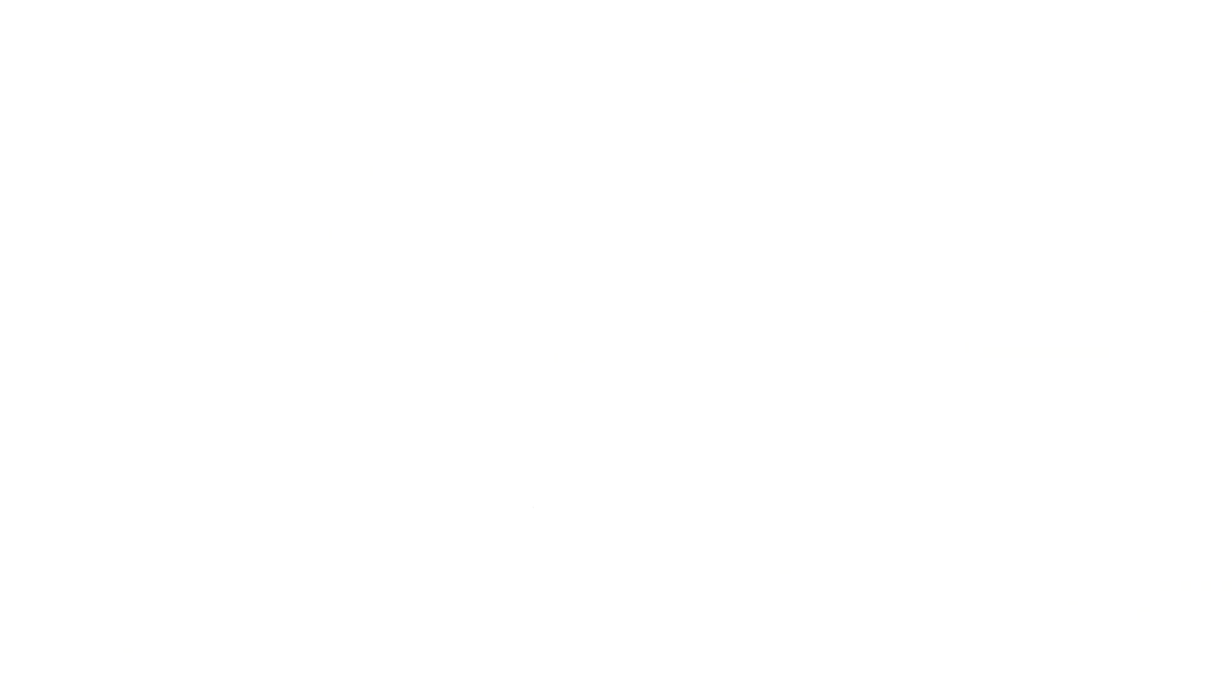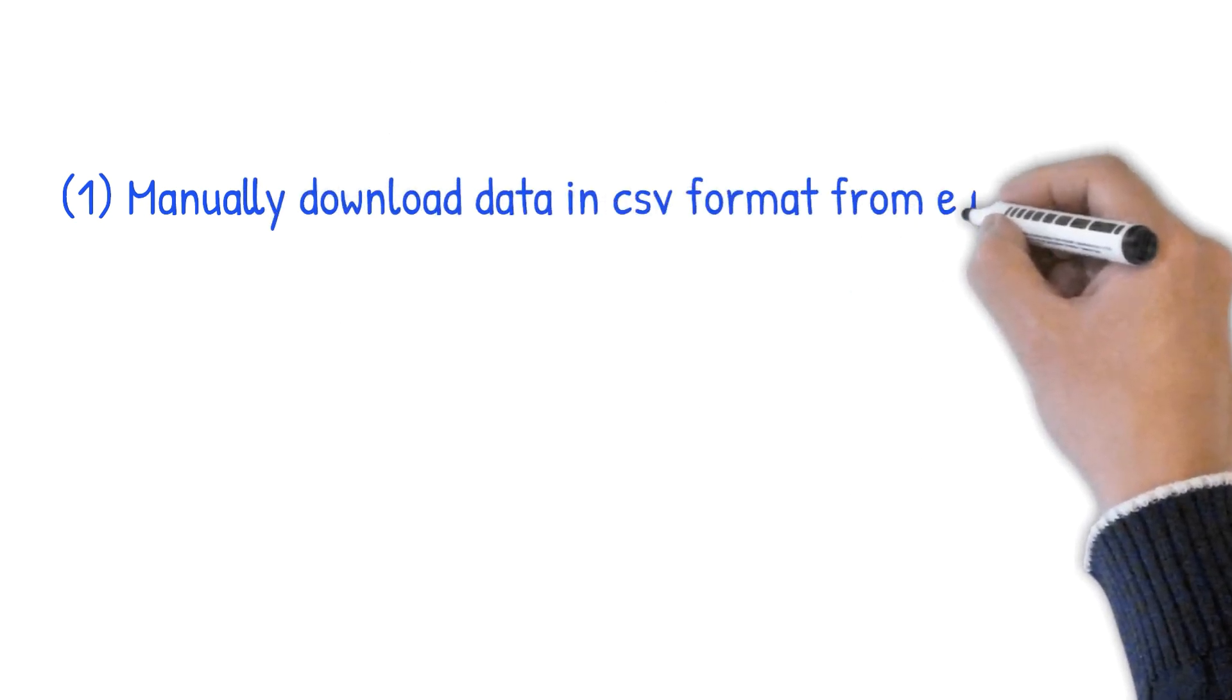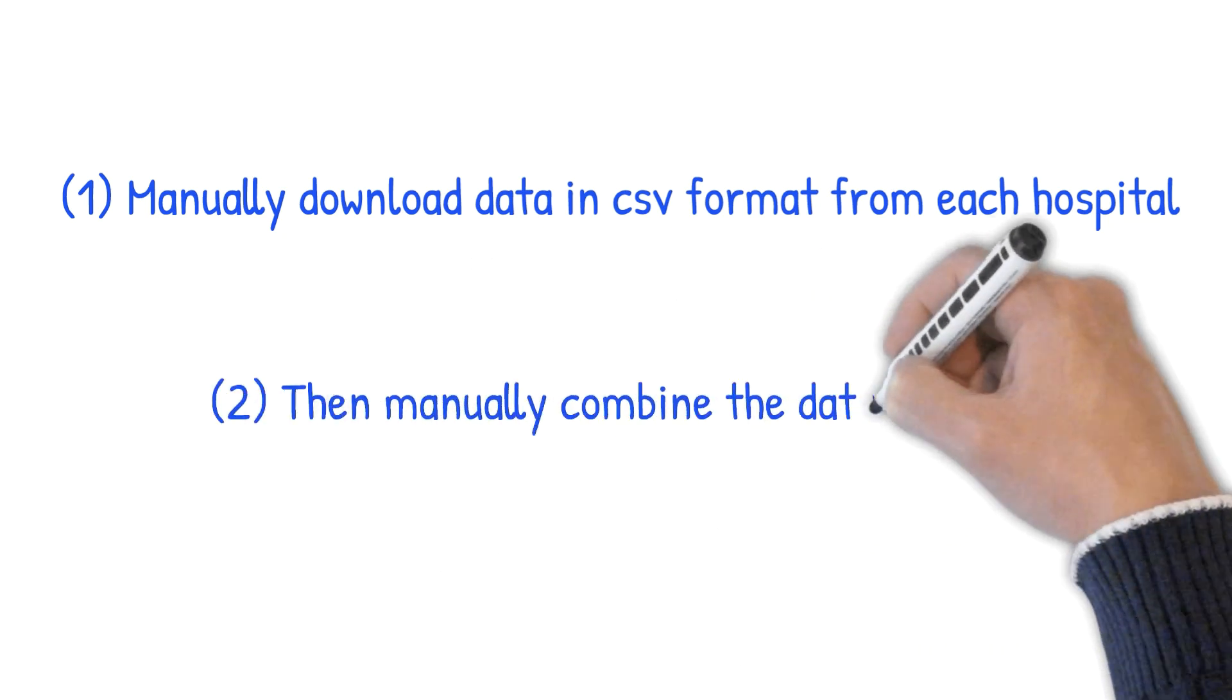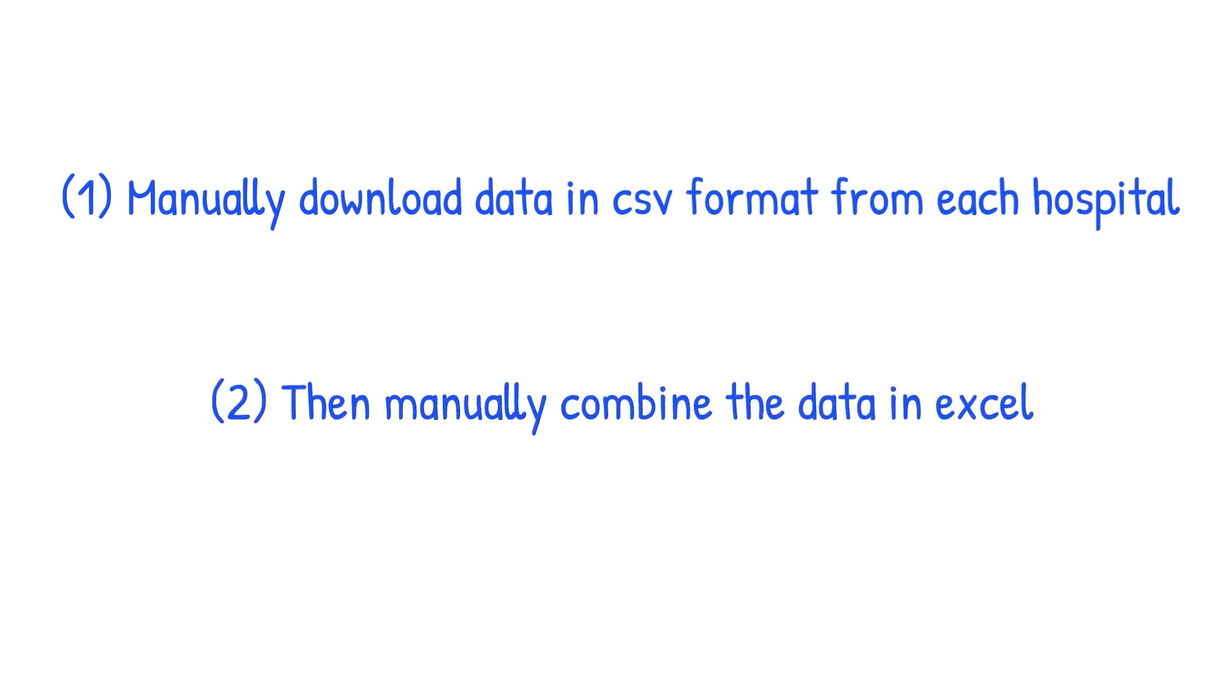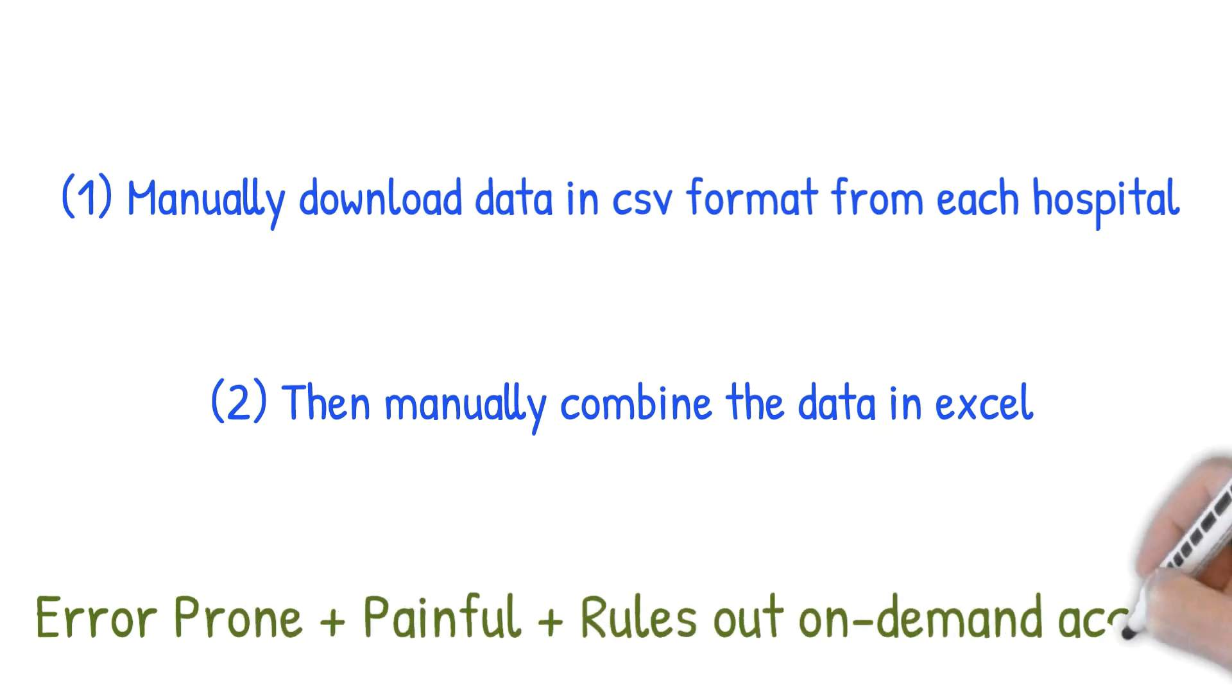The only way to get a report across all three hospitals is to first download the data from each of these hospitals in CSV format. Once you have the data, you can then combine it in Excel. As you can see, this process is potentially error-prone, painful, and rules out on-demand quick access to the data.